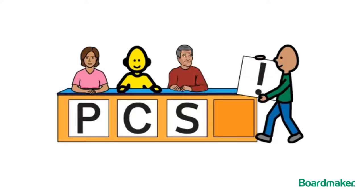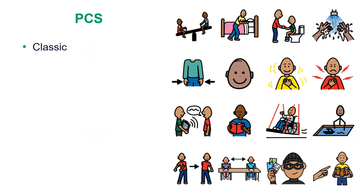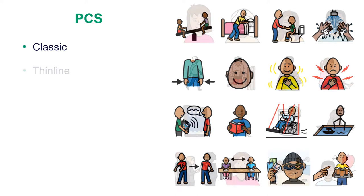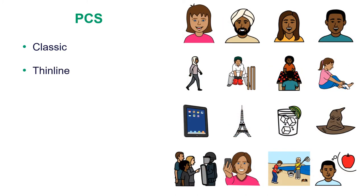Now let's talk about PCS — Picture Communication Symbols — the heart of Boardmaker. With over 50,000 symbols included in four different styles covering a huge range of topics. The original classic symbols feature lovable eggheads, offering simplicity and gender-neutral avatars. The thin line symbols are created with more detailed representations depicting people of various ages and ethnic backgrounds.